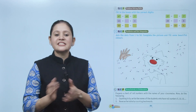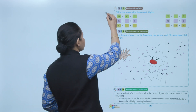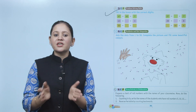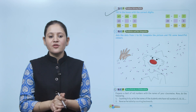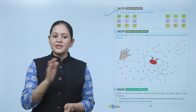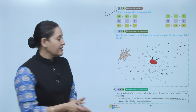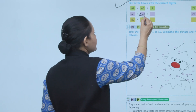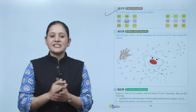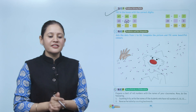Next is problem-solving skills. Fill in the boxes with the correct digit. 47 is equal to 40 plus 7. 43 is equal to 40 plus 3.